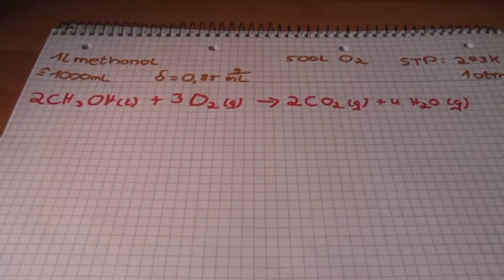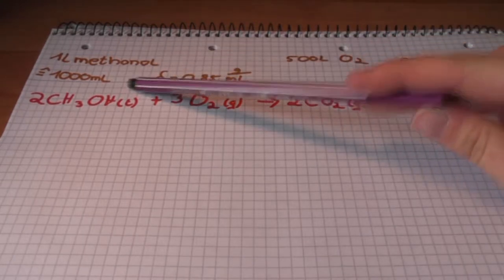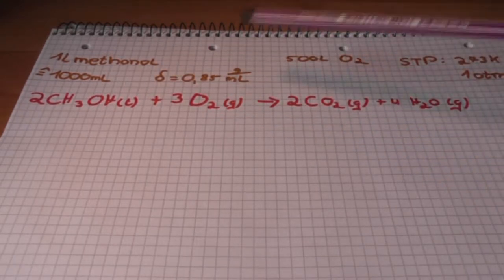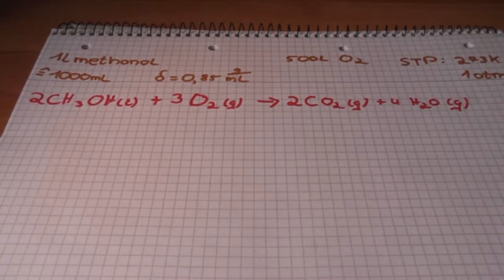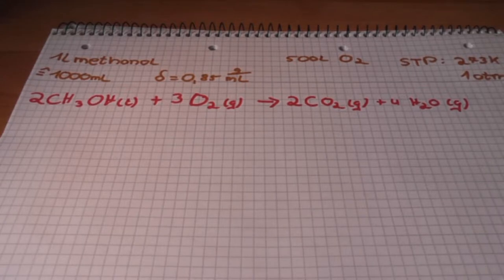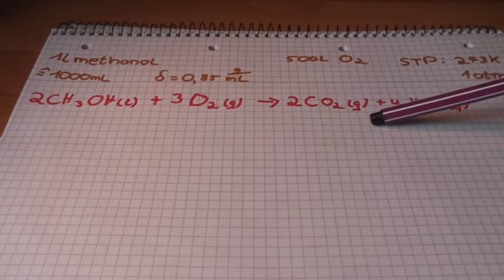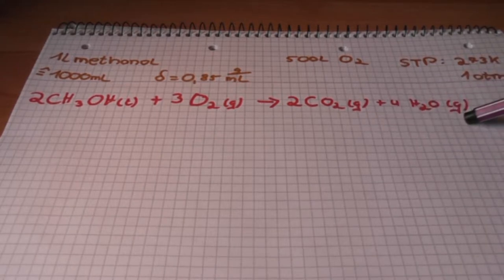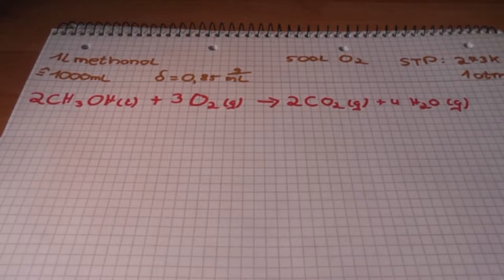The exercise is: consider the combination reaction between 1 liter of liquid methanol with density 1.85 gram per milliliter and 500 milliliter of oxygen gas measured at STP, that means 273 Kelvin and 1 atmosphere. The products of the reaction are carbon dioxide gas and water vapor. Calculate the volume of liquid water formed if the reaction goes to completion and you condense the water vapor.